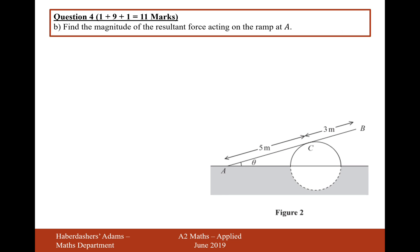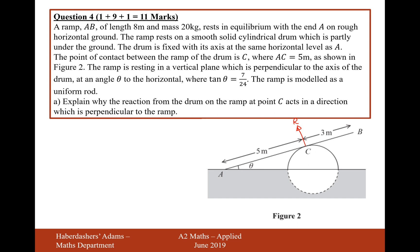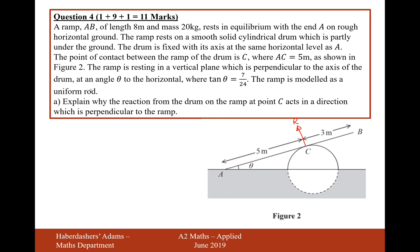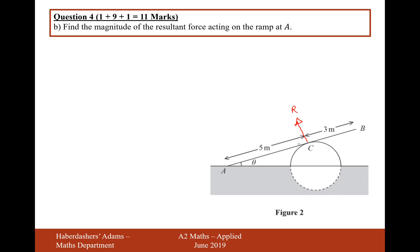Let's move on to part B. Find the magnitude of the resultant force acting on the ramp at A. So it's basically find this force here. There's nine marks, so we've got a lot to do. The ramp is of length 8 meters and it's 5 meters up until that contact point, and it's a uniform rod. So it's going to be a uniform rod, so it's 20G four meters up the ramp.